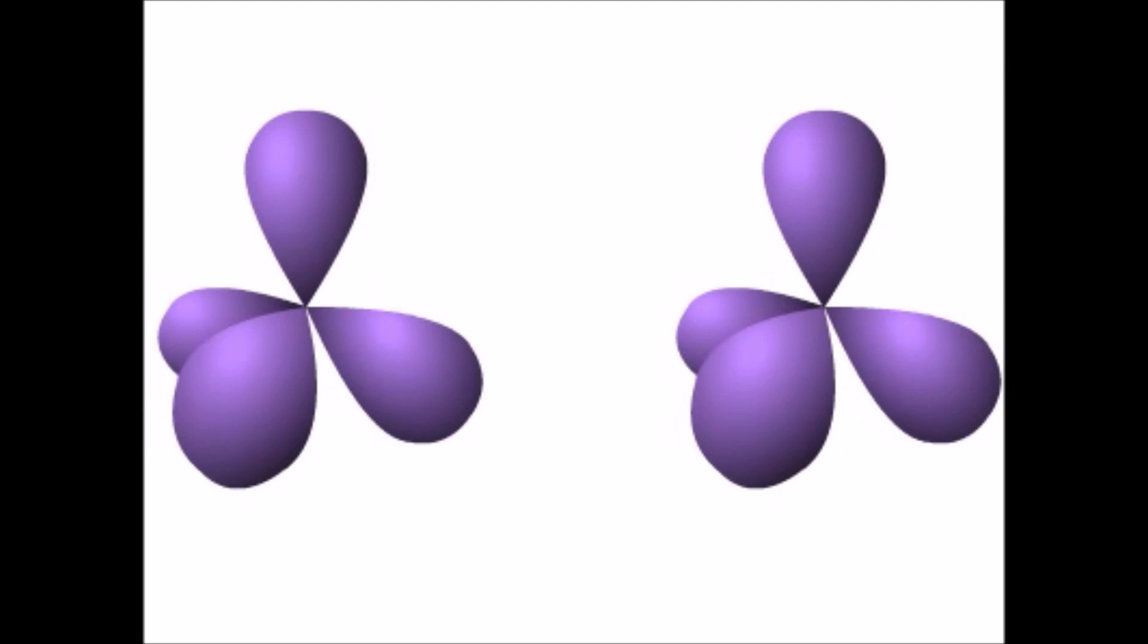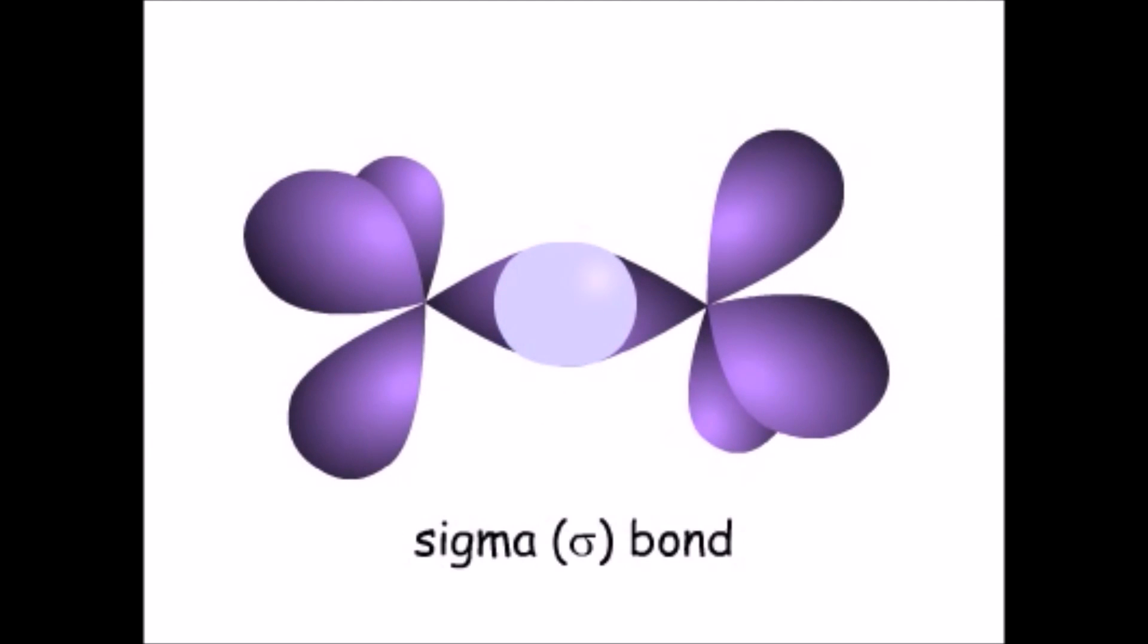A sigma bond is the most common type of bond. Sigma bonds are present in single, double, and triple bonds. A single bond is always a sigma bond.